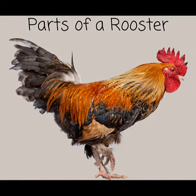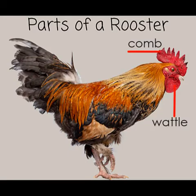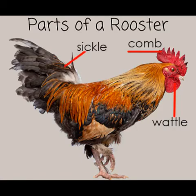A rooster has many of the same parts as a hen. However, their comb and wattles are larger, their feathers are fancier and more colorful, and they have large sickle feathers on their tails and large spurs on the backs of their legs.